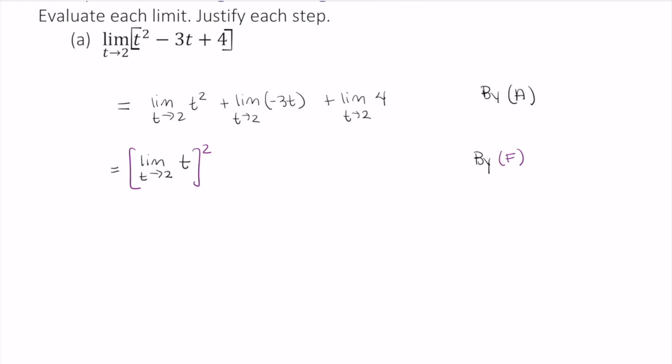Additionally, by C, I can pull this constant out to the front of the limit. So we have negative 3 times the limit as t approaches 2 of t. And again, that's by C. And I'm not going to do anything to this last part on this step.